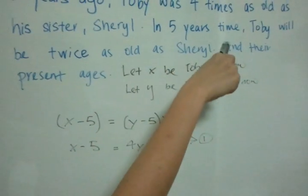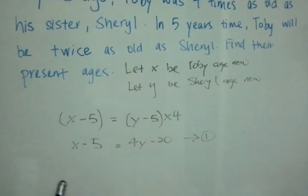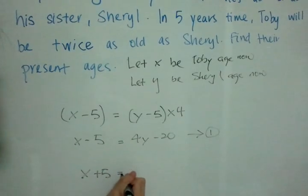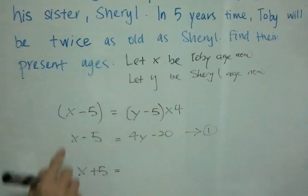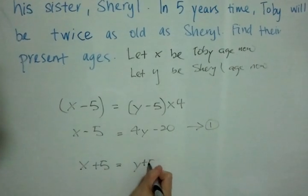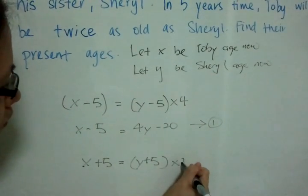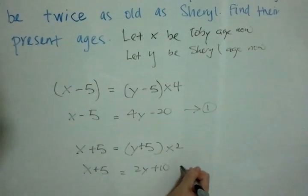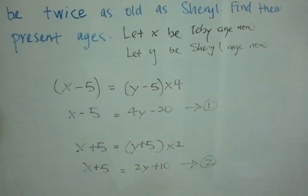In five years time, Toby will be twice as old. So five years later, Toby's age will be X plus five, and he will be twice Cheryl's age, Y plus five, times two. So X plus five equals two Y plus ten. This will be our second equation.